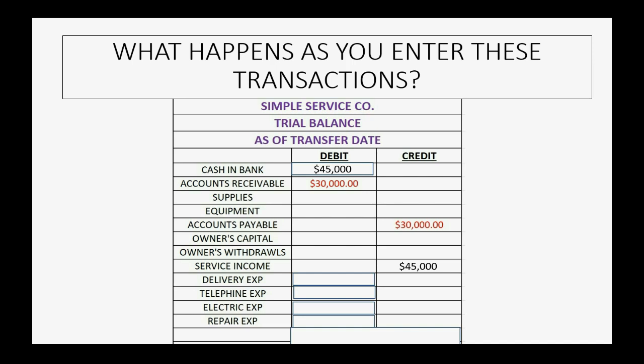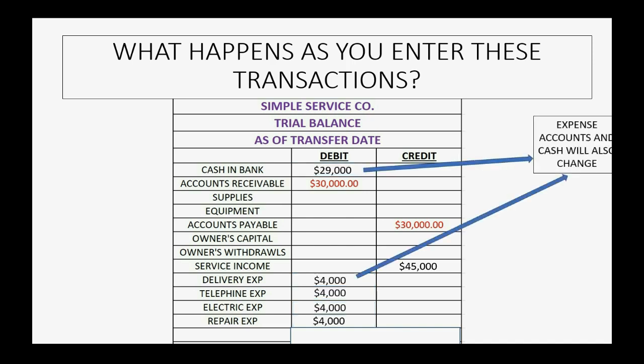When you record the accounts payable transactions to get the balance of accounts payable correct, other accounts are also going to change. Probably the balance of expenses will go up and the balance of cash will go down a little as you record the currently relevant accounts payable transactions.